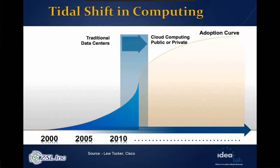Looking at the time shift in cloud computing: from 2000 to 2010, there's been a clear shift toward cloud computing because everything is virtualized — it's cheap and on-demand. Traditional data centers are converting themselves to private cloud models. Most data centers currently being virtualized are now converting into cloud models.